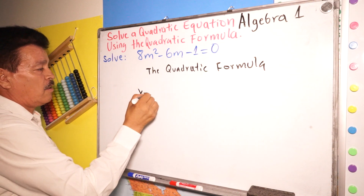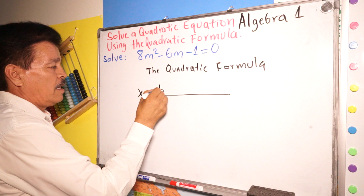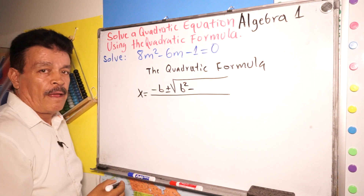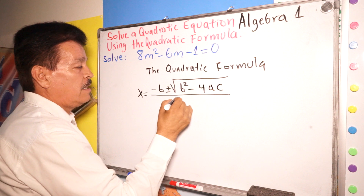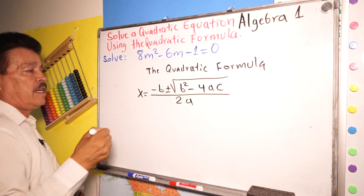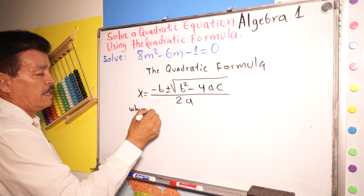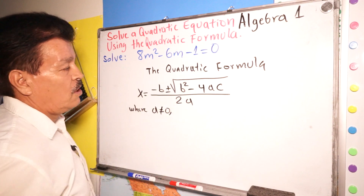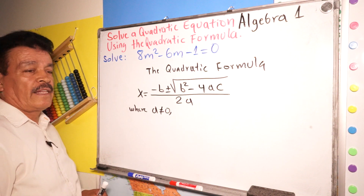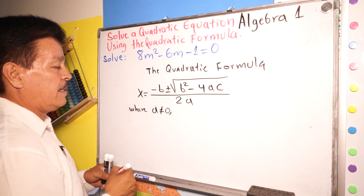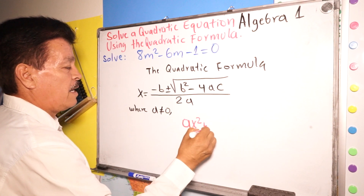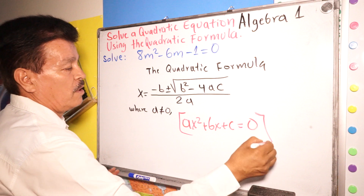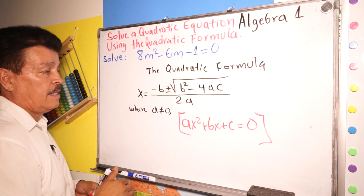The quadratic formula is x equals negative b plus or minus the square root of b squared minus 4ac, divided by 2a, where a is not equal to 0. It can be used to solve a quadratic equation of the form ax squared plus bx plus c equals 0.